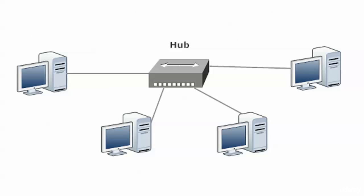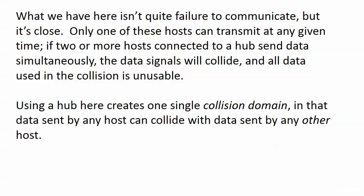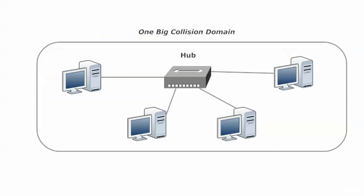You're going to be introduced to the phrases 'collision domain' and 'broadcast domain' in this section. You're going to see the effects that hubs, bridges, and switches have on them — and you've got to be crystal clear on that, especially for the CCENT exam if you're taking the two-exam path. So with a hub, you end up with one big collision domain.